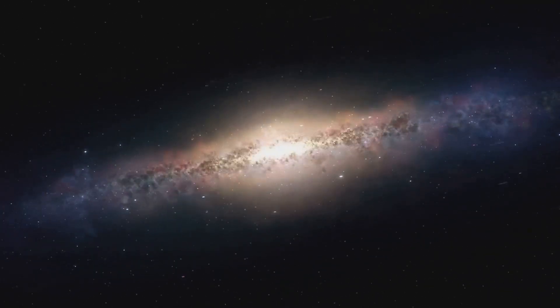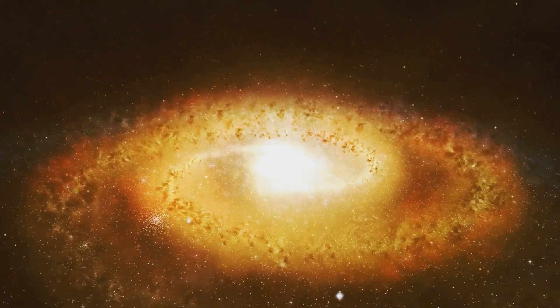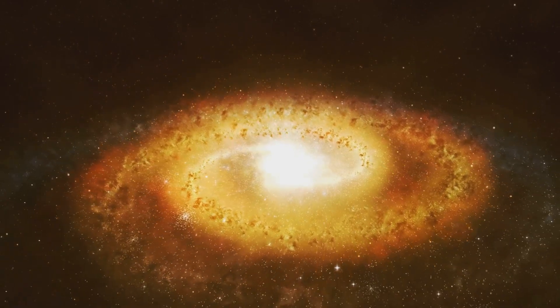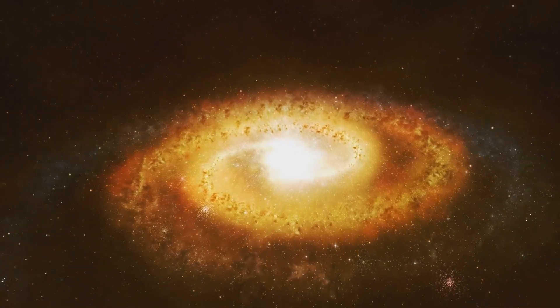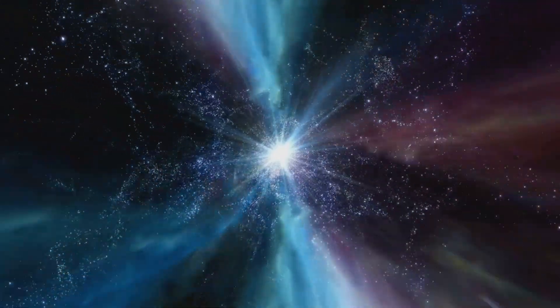In 2007, a supernova, dubbed SN2007AF, was detected within the galaxy. This was not just any supernova, but a type Ia supernova, a specific kind of supernova that occurs in binary star systems.